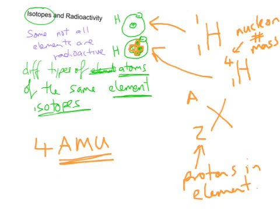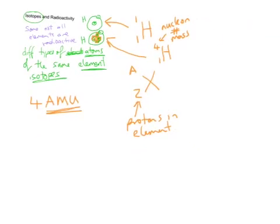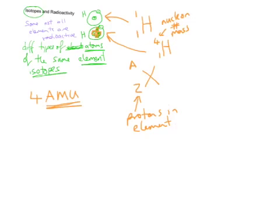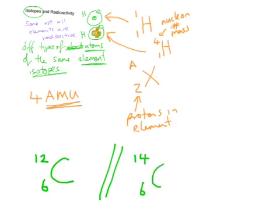I'll give you one more example which links into radioactivity. One more example that links into radioactivity: you have carbon, which is 6th on the periodic table, so it's going to have 6 down the bottom because that's the number of protons, but carbon 12. And here's another isotope of carbon, is carbon 14. Carbon 14 is radioactive.